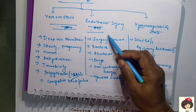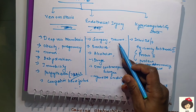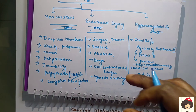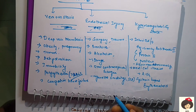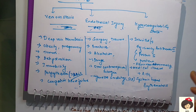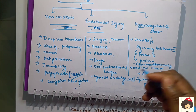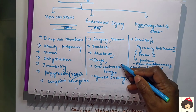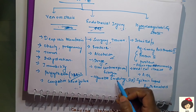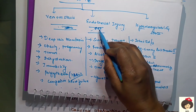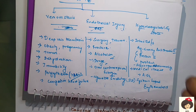Endothelial injury can occur due to surgery or trauma — blood vessels may be cut and during repair the surgical site forms a clot. Fracture can accidentally injure blood vessels, and platelets come to that area to produce a clot. Alcoholism, drugs, and oral contraceptives are chemicals that can irritate vessel walls causing endothelial injury. Smoking contains nicotine — a tar-like material that accumulates on the inner lining of blood vessels and attracts platelets to form a clot.